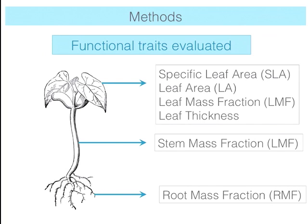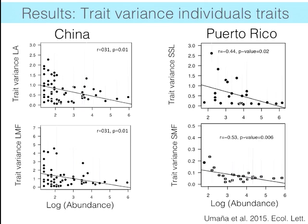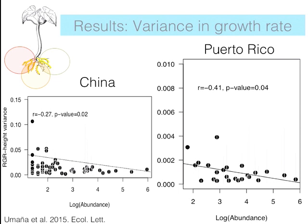I wanted to evaluate whether the variance in those traits was changing across different species and was related with abundance. I estimated the variance for each trait for each species and correlated that with species' relative abundance. Given important variation in sample size, I used rarefaction to estimate more comparable estimates. The results for China and Puerto Rico show the variance in different traits on the y-axis and the logarithm of abundance on the x-axis. Overall, there is a negative correlation indicating that common species tend to be less variable in traits than rare species — for all traits and both sites.